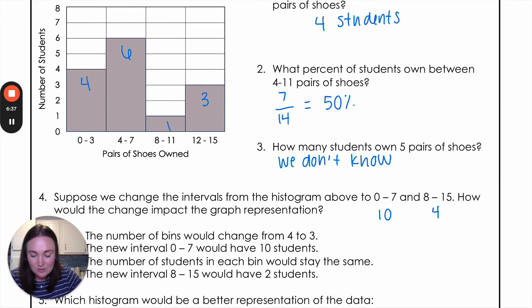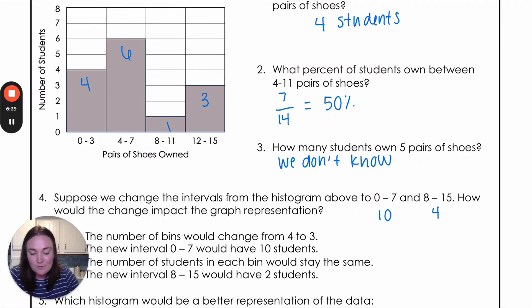So let's look at those answer choices. We have the number of bins would change from four to three. Well, nope, there would only be two bins. There would be two intervals there, so that's not correct. The interval from zero to seven would have 10 students. Yep, we just talked about that. The number of students in each bin would stay the same. Nope, it's changing because we're shrinking that number of intervals. And the new interval eight to 15 would have two students. We know that is not correct either. It would have that four.